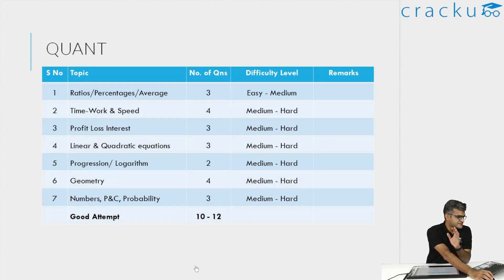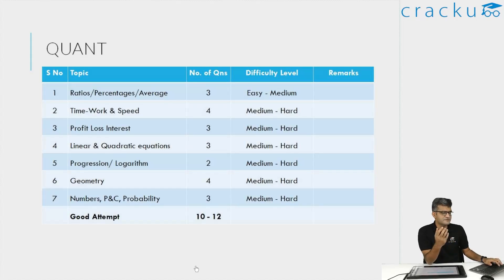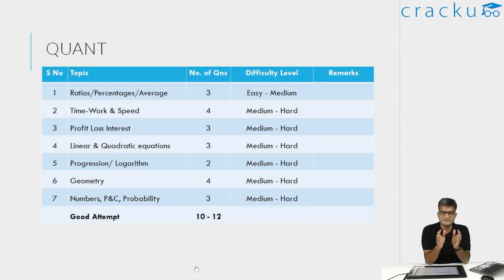Progressions had one question — it is a very lengthy, hard question and many people did not get it correct. Quadratic equations is something people find scoring, but the question we gave is slightly on the tricky side. If you are not intimidated and look at it normally, it is not a very theoretical question — you should be able to get it correct. But because it is unconventional, many people did not get it. For time, speed, work, and distance, we gave four questions — two are straightforward and two are difficult.